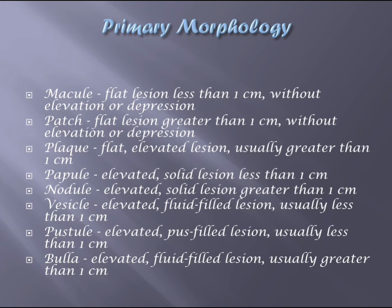I have another video in dermatology talking about types of lesions with images and descriptions — feel free to check it out. Here I'll talk about them briefly. Primary morphology: a macule is a flat lesion less than one centimeter, without elevation or depression — if you close your eyes and run your hand over it you won't notice it. A patch is a flat lesion greater than one centimeter without elevation or depression. The difference between macule and patch is simply the size.